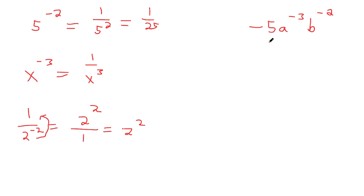Now over here we have some negative exponents, so what I'm going to do is kick this downstairs and kick this downstairs in the fraction. The negative 5 stays where it is because that doesn't have a negative exponent on it, but the a to the third goes downstairs and the b to the second goes downstairs.